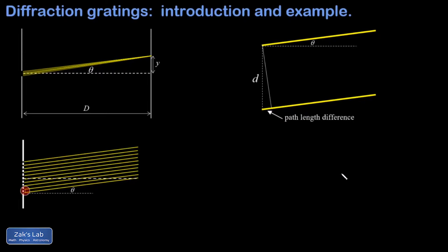To understand what's going on, we use several diagrams, progressively zooming in closer. In the first diagram I'm really zoomed out — the diffraction grating is just a tiny little slit, and I have rays coming through representing all the gaps. These rays interfere constructively at a particular angle theta on the screen. I label the angle theta, the distance from the center line to the interference maximum as y, and the distance to the screen as d.